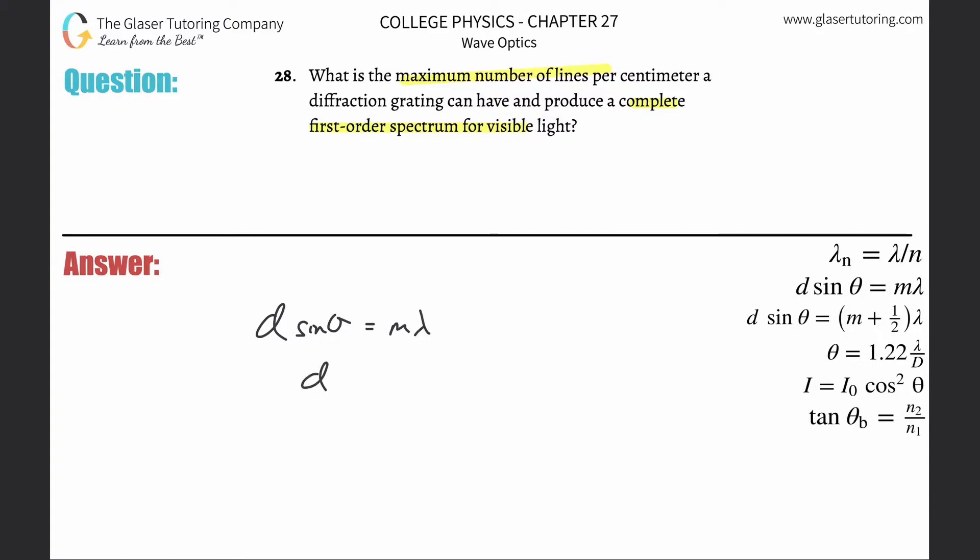So we have to solve this for d, so that's just m lambda over sine theta. Now we want all the lines to fit on this projection. So the theta value has to be a maximum. It actually has to be 90 degrees, and therefore sine of 90 is just going to be 1.